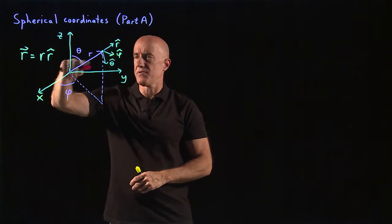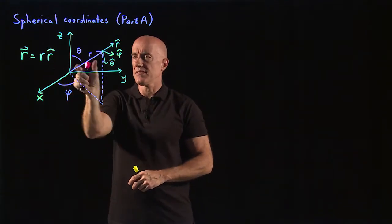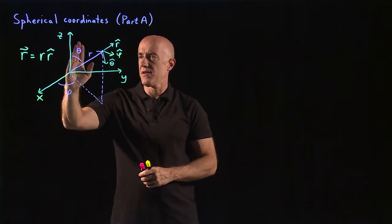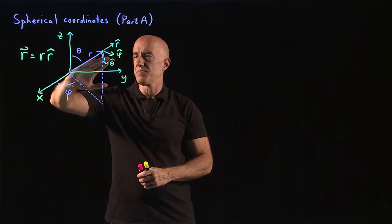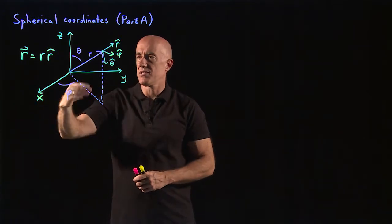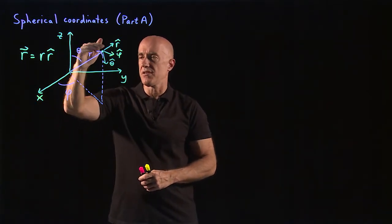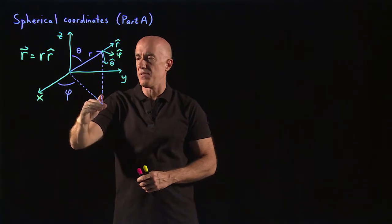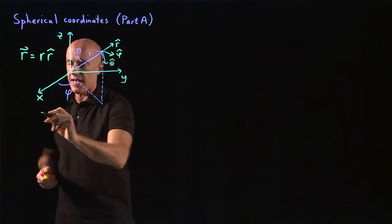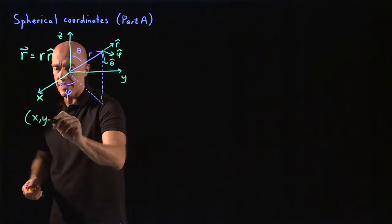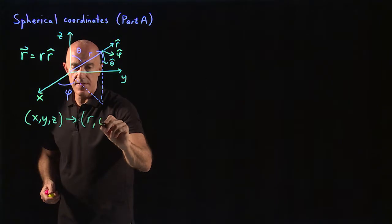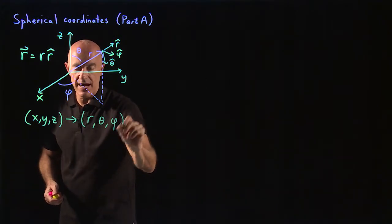So r is our position vector here. It has a length of r. The other two coordinates are theta — the angle this position vector makes with the z-axis — and then phi, which is the angle that the projection of this position vector onto the x-y plane makes with the x-axis. So here we have x, y, z, and spherical coordinates will be r, theta, and phi.